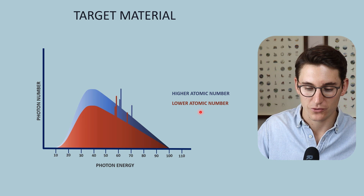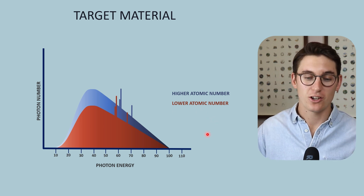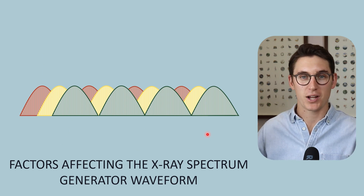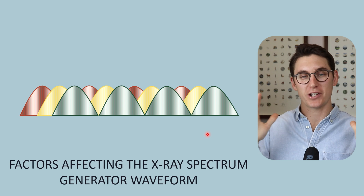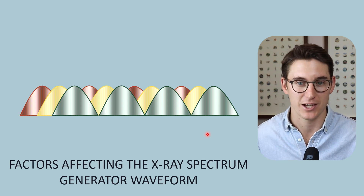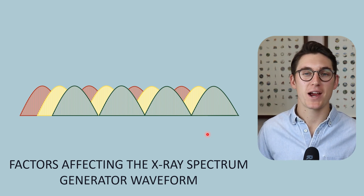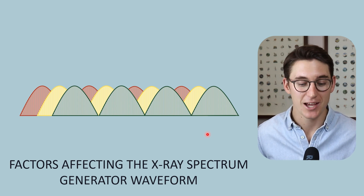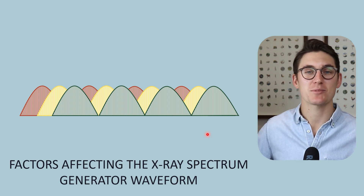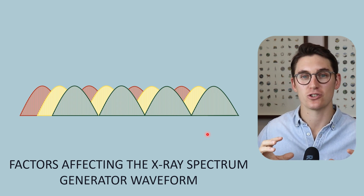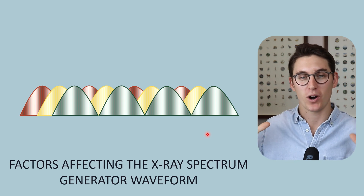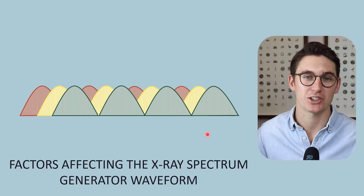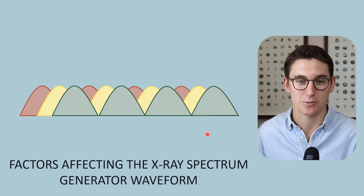The last factor we can change is our generator waveform — the electricity supply to our x-ray tube creating the tube potential between cathode and anode. In actual practice this is something we won't be changing, as our generator waveform will generally be set. But this type of question comes up repeatedly in exams because it requires knowledge of the x-ray circuit, how our x-ray tube works, and x-ray production at the anode and the changes that has on our x-ray spectrum.